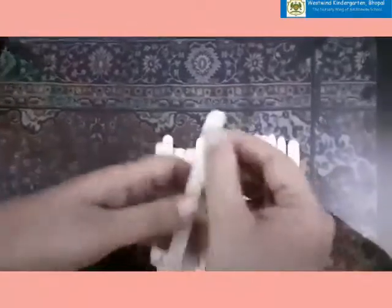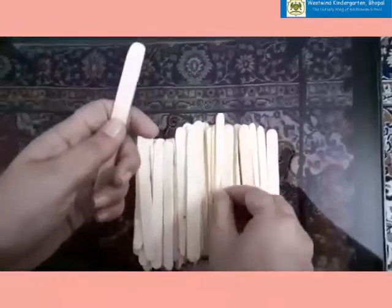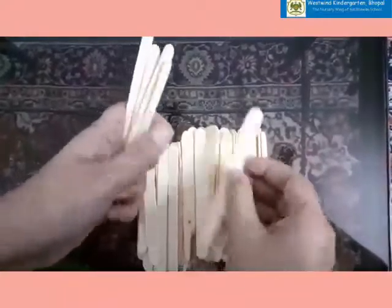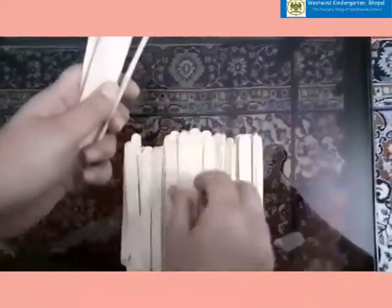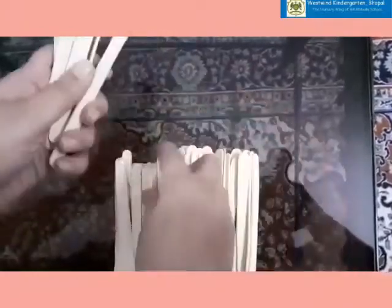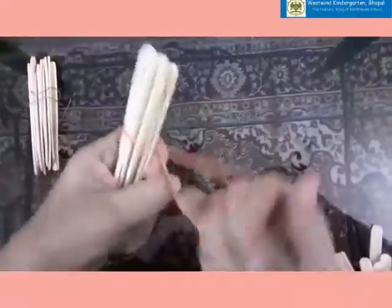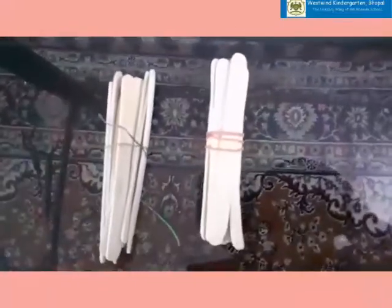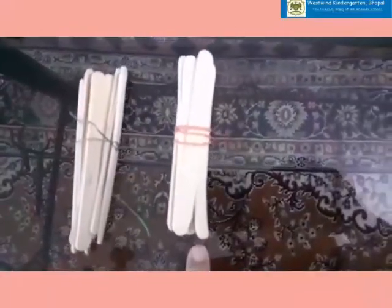Now again we are going to count: 1, 2, 3, 4, 5, 6, 7, 8, 9, and 10. How many ice cream sticks are these? 10. So we will make one bundle. So how many? 1 and 2. 2 bundles of ice cream sticks, 10 and 10.